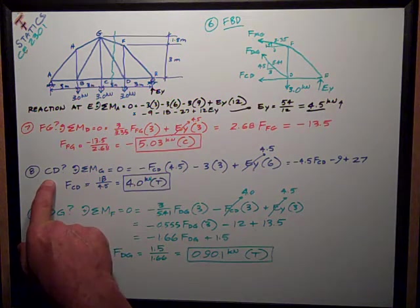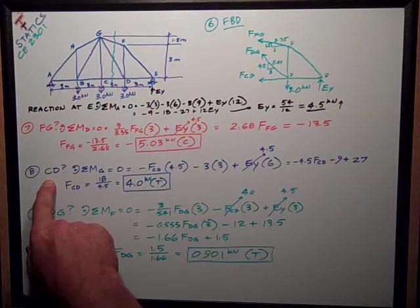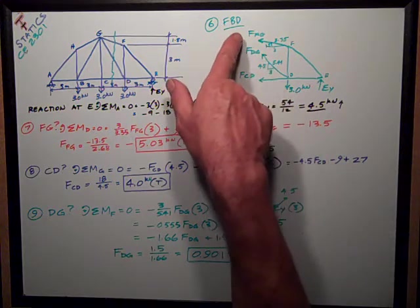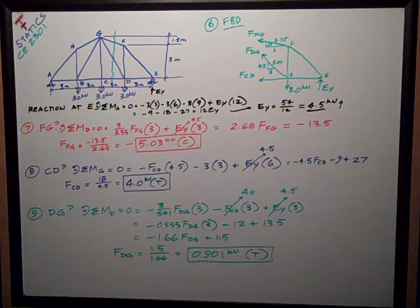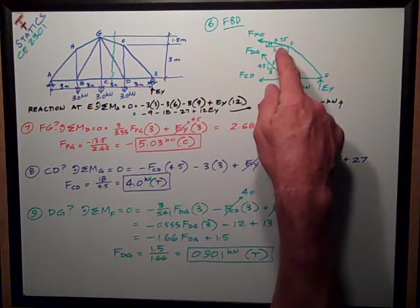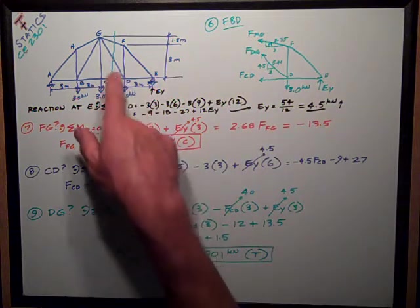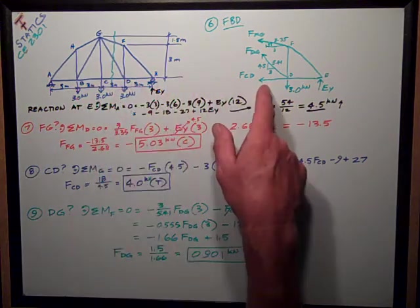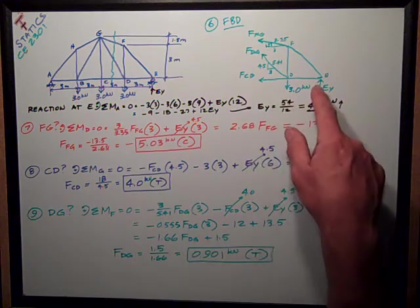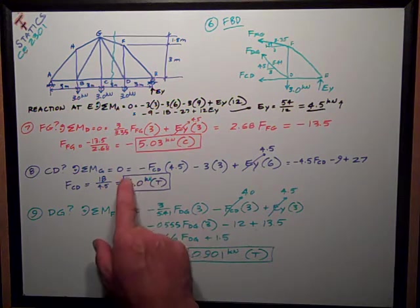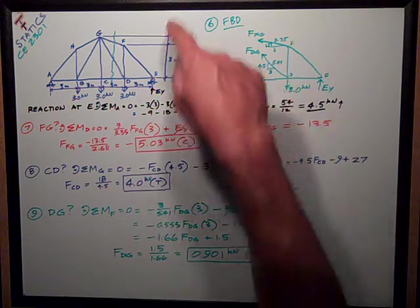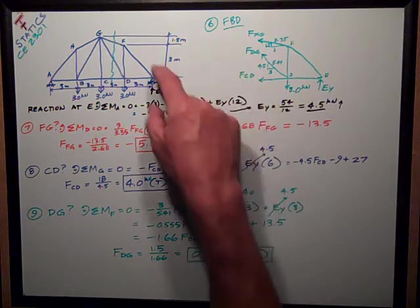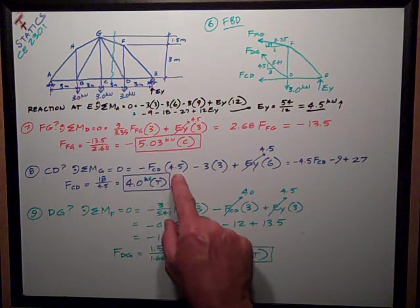So then I look at the forces in CD. Sum of moments is positive about point G. I chose point G, which is not even on my section, but I can still sum moments about it over here because it eliminates the force in FG, it eliminates the force in DG, because they both pass through there. And all I'm left with is the force in CD and these two applied force and the reaction at E. So I get negative FCD, because it's trying to rotate clockwise about point G. Its moment arm is 3 plus 1.5, or 4.5.